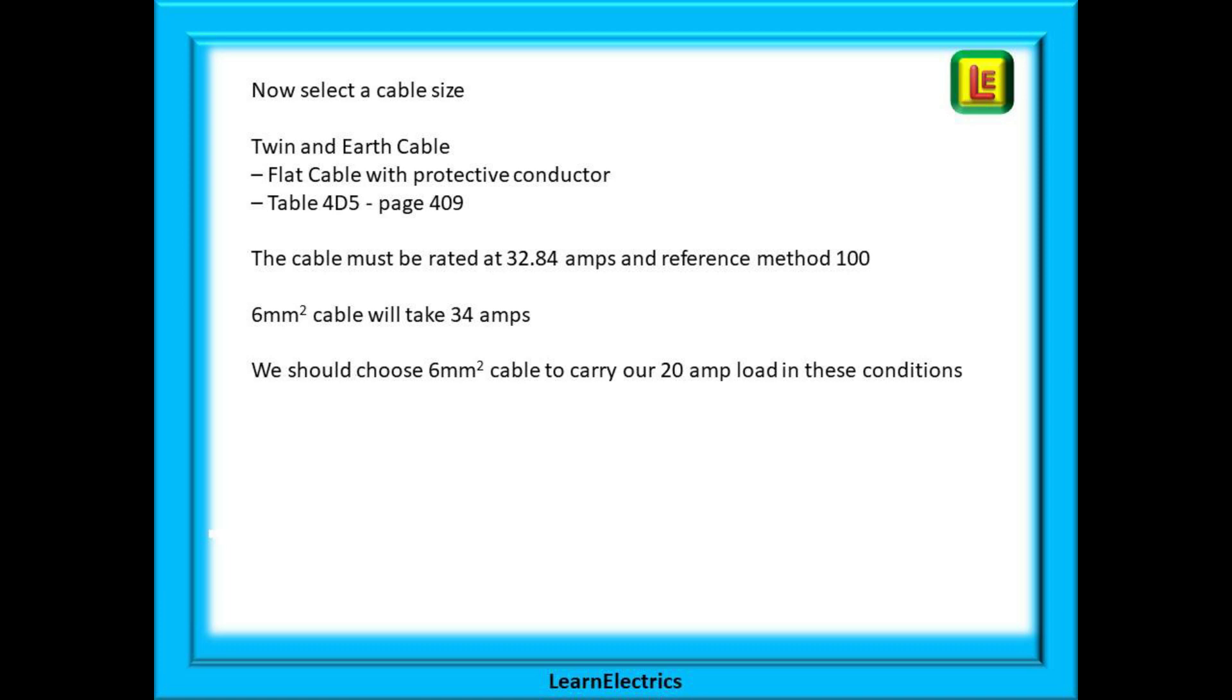Now select a cable size. We know it is twin and earth cable which is called flat cable with a protective conductor. This is table 4D5 and is found on page 409. The cable must be rated at 32.84 amps and reference method 100 must be used. And we find that 6mm cable will take 34 amps. Therefore we should choose 6mm cable to carry our 20 amp load in the given conditions.